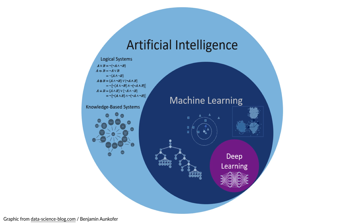Before we do a deep dive into where machine learning stands at this time in cardiovascular imaging, I'd like to take a minute and look at the terminology used when we talk about machine learning. Machine learning is a subfield of the field of artificial intelligence, and this is the science of having computers perform tasks that are typically done by humans today. AI is based on knowledge-based systems and logical systems, and when we talk about machine learning, we refer to a collection of mathematical methods aimed at pattern recognition.